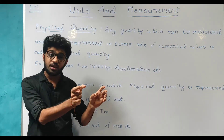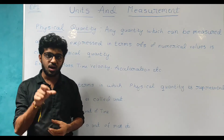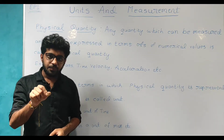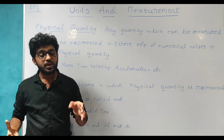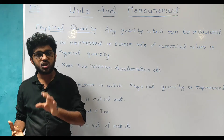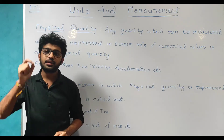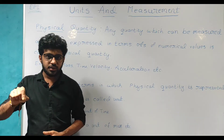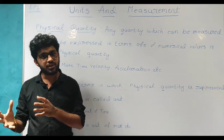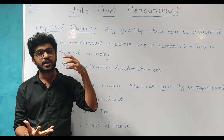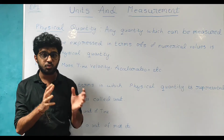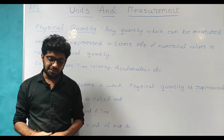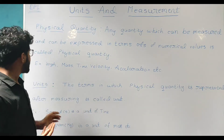To recap: a physical quantity is something which can be measured, and after measuring, we can express it in numerical values — such quantities are called physical quantities. Units are the terms in which a physical quantity is represented after measuring.